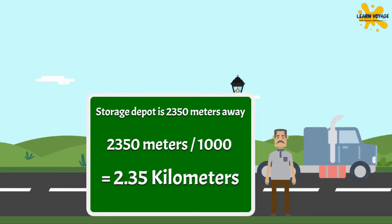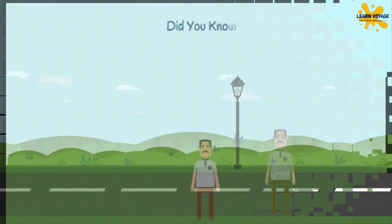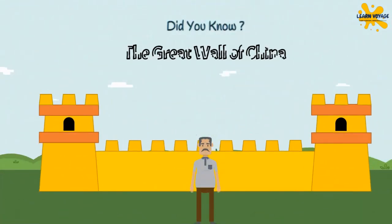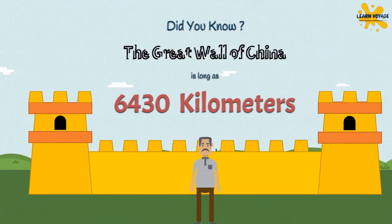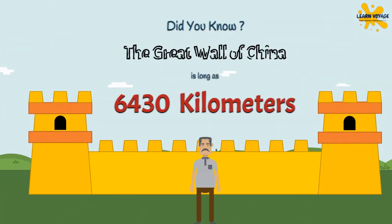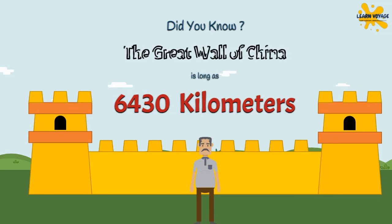Magnificent, if you guessed it exact! And if your answer was not matching, replay the video and practice more. Did you know? The famous Great Wall of China is approximately 6430 kilometers long. Here is an exercise for you — can you convert it into meters and post your answer in the comment box?